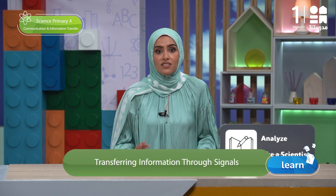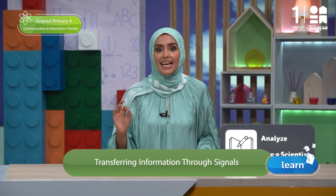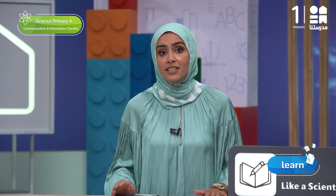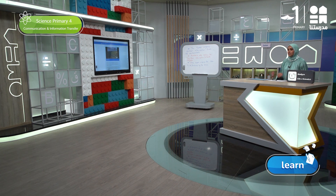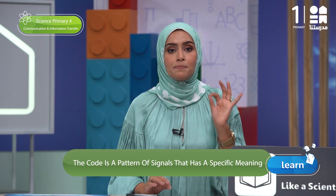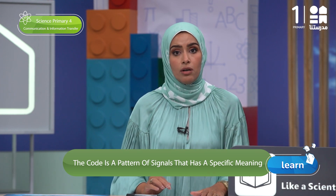One of the most interesting things for me was that we talked about how a person can send information and messages using different signals. This is the end of our lesson. We learned today many interesting facts using different patterns or signals. We also knew that the code is a pattern of signals that has a specific meaning agreed on by the sender and the receiver to translate the message correctly.